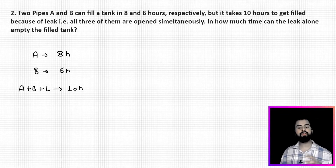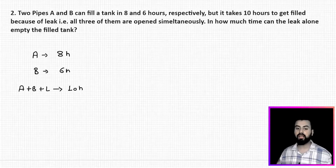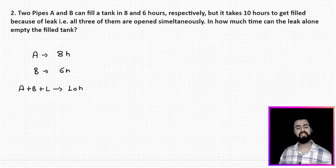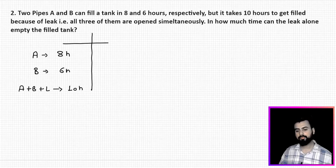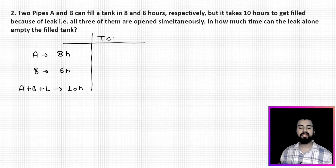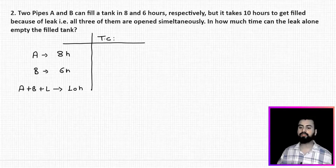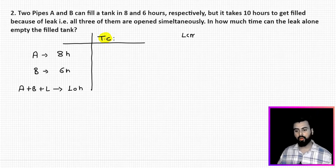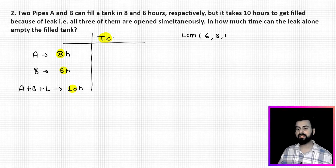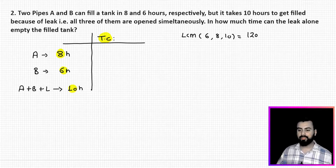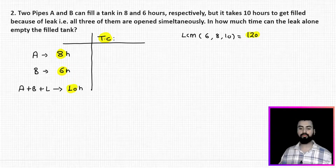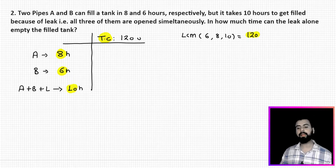The question is: in how much time can the leak alone empty the filled tank? The first step, as you already know, is to assume the total capacity. In problems based on pipes and systems, the first step is to assume the total capacity of the tank as the LCM of the given numbers: 8, 6, and 10. LCM of 6, 8, and 10 is 120. So let me use 120 units as the total capacity of the tank.